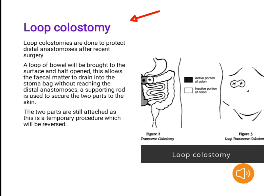Loop colostomy. Loop colostomies are done to protect distal anastomoses after recent surgery. A loop of bowel will be brought to the surface and half-opened. This allows the fecal matter to drain into the stoma bag without reaching the distal anastomosis. A supporting rod is used to secure the two parts to the skin. The two parts are still attached, as this is a temporary procedure which will be reversed.